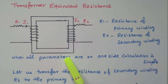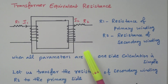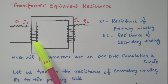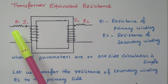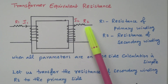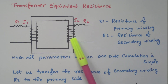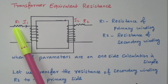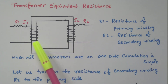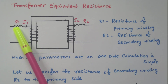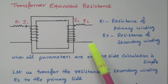Consider this transformer — this is an iron core having the primary winding and secondary winding. This winding is an inductor, an inductance coil, but this inductor also has some amount of resistance, that is called R1. R2 is the resistance in the secondary coil, and R1 is the resistance in the primary coil. Both primary and secondary coils are inductive coils but also have some resistance, called R1 and R2.